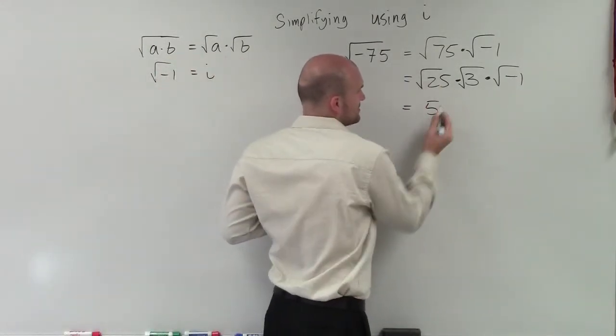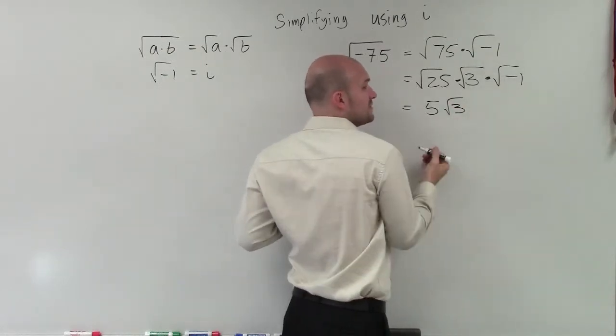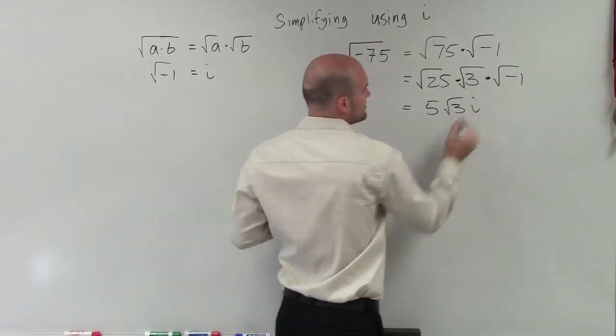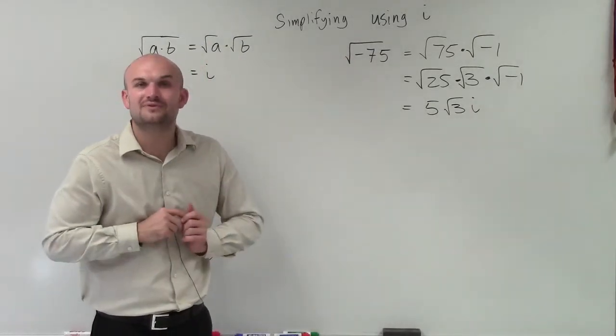So the square root of 25 we know is 5. Square root of 3 is going to remain square root of 3. And the square root of negative 1 is just going to leave this with i. So there you go, ladies and gentlemen. That is how you simplify using i. Thanks.